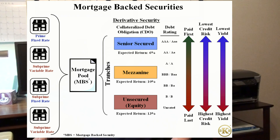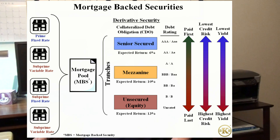Investors who purchase CDOs would receive a return commensurate with the tranches' risk level. Senior secured debt had the lowest credit risk and lowest yield, while unsecured debt had the highest credit risk and the highest yield.